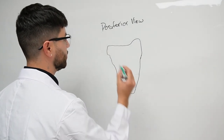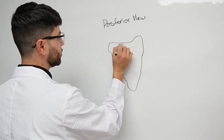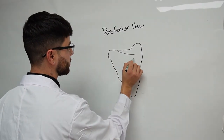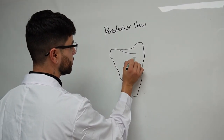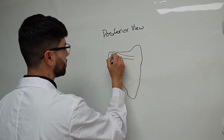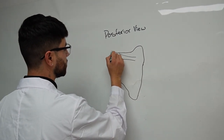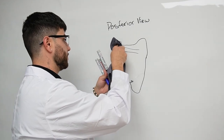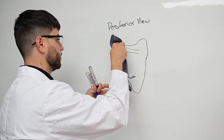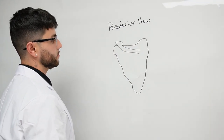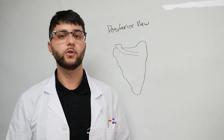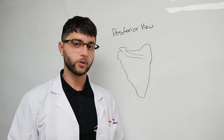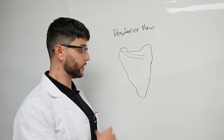From the back, we're going to start off with the spine of the scapula. So you've got the general shape of the scapula, so let's fill in the gaps.